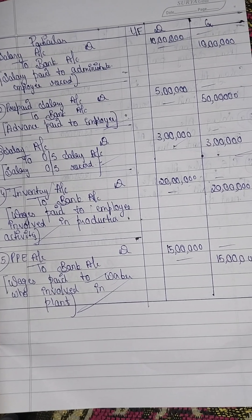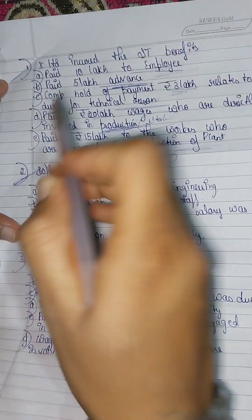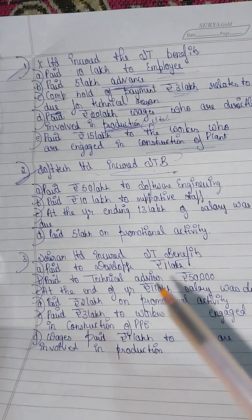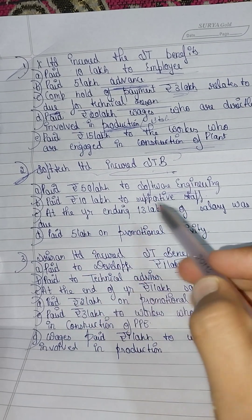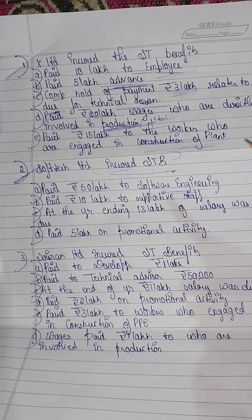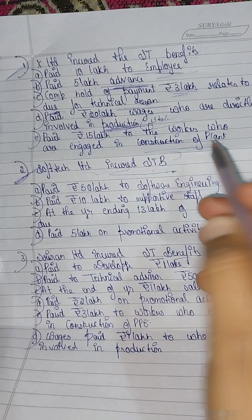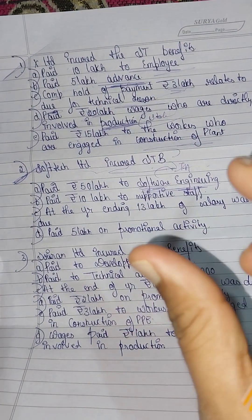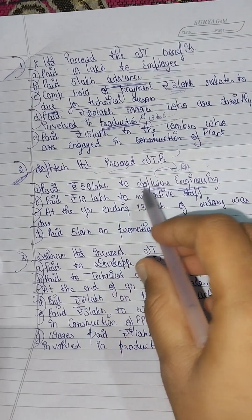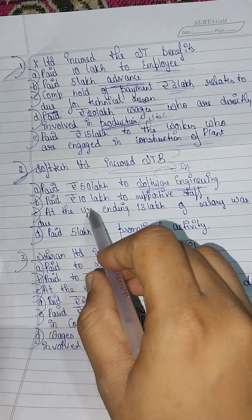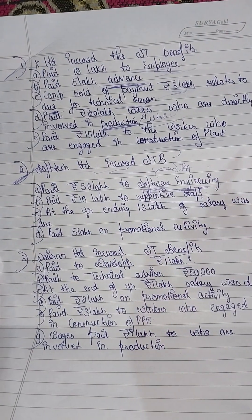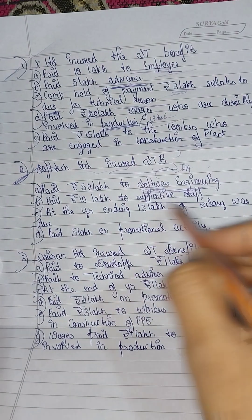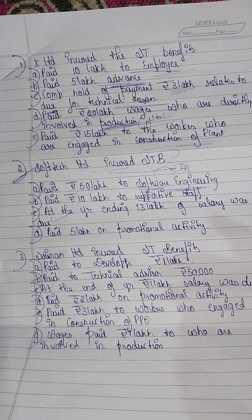So this is the first problem answer. Now the second problem: Soft Tech Limited incurred short-term benefits. They paid rupees 50 lakh to software engineers. They can pay the salary — but they are intangible assets. Paid rupees 10 lakh to supportive staff — same as salary account to bank account. At the year ending, 13 lakh of salary was due.